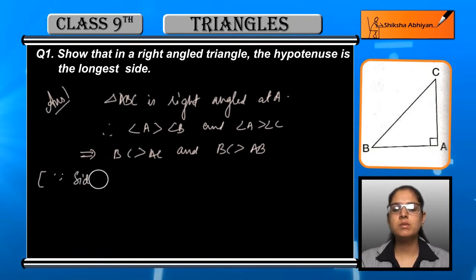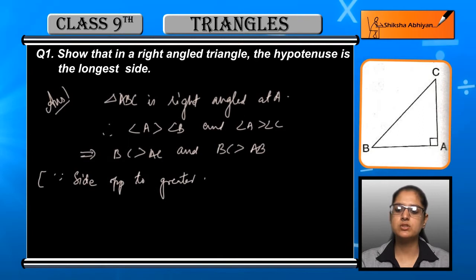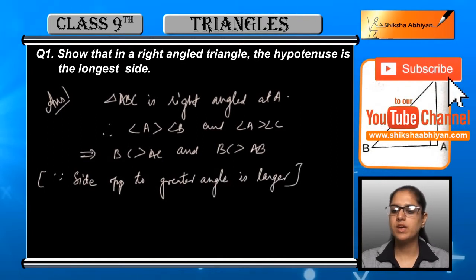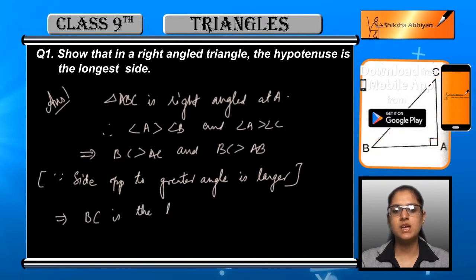Because angle A or B main se A bada and A ke saamne wali side hai BC. B ke saamne wali side hai AC, so BC jo hai wo AC se badi hogi. And angle A or C main se bhi A bada hai, so A ke saamne wali side hai BC and C ke saamne wali side hai AB, so BC, AB se bada hoga.